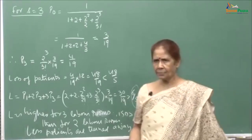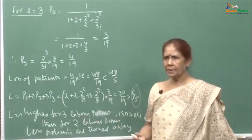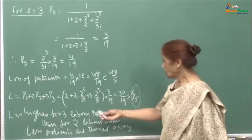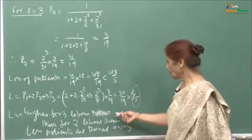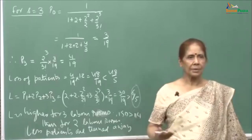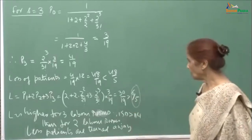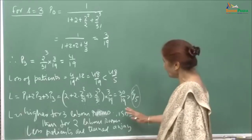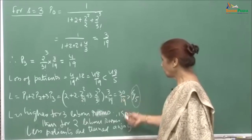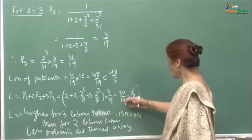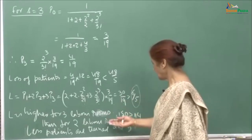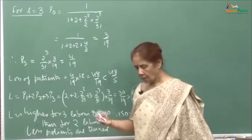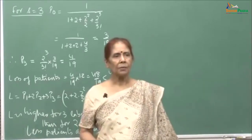So L is higher for 3 labour rooms than for 2, which is obvious since you are turning away fewer patients. If good will counts, it is more important to have a good reputation in the community. 3 labour rooms may be worthwhile, but considering the expense of another room, one more doctor, one more nurse, and so on, this is something for the organization to consider. The numbers give a good measure to see that utility would be higher with 3 labour rooms.